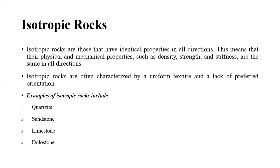For example, if you look at quartzite, sandstone, limestones, and dolostones, you'd agree that these rocks are not layered. They are not in the form of layers, which means they have a uniform texture and do not have a preferred orientation of certain minerals.